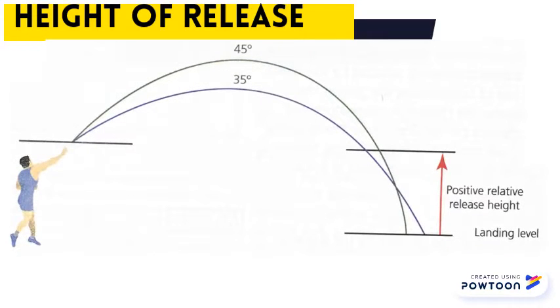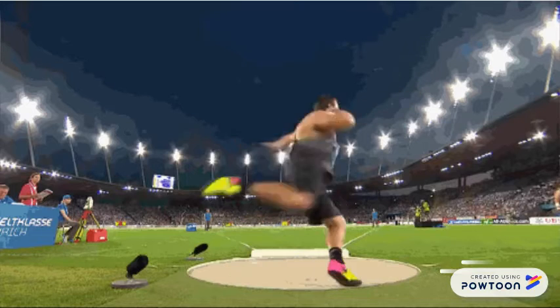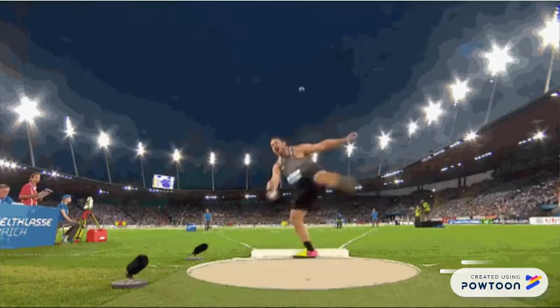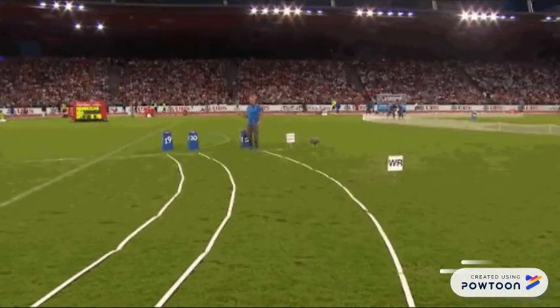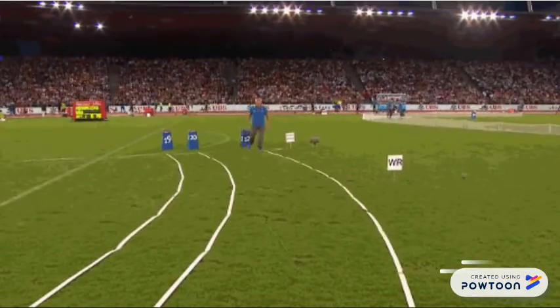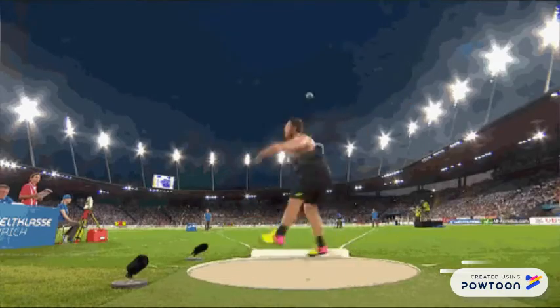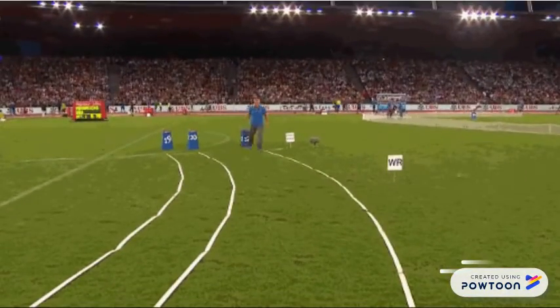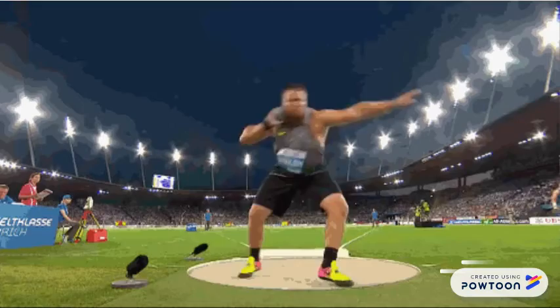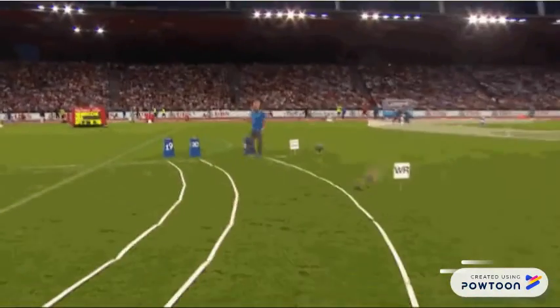The release height and landing height must be equal for the angle to be optimal at 45 degrees. An example of this is javelin and shot put, as the optimal angle of release must be less than 45 degrees, as the projectile already has an increased flight time due to the increased height of release.